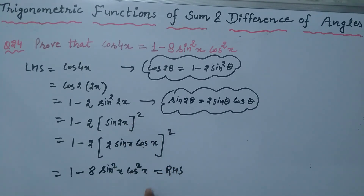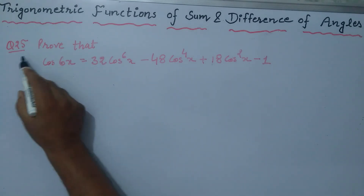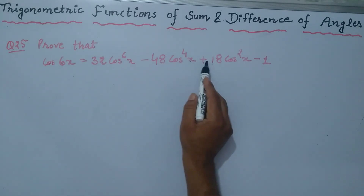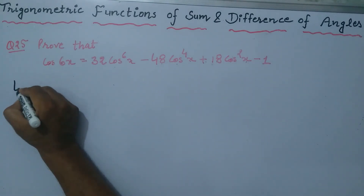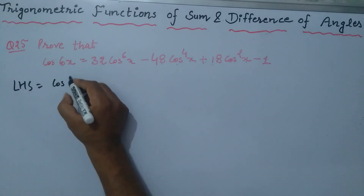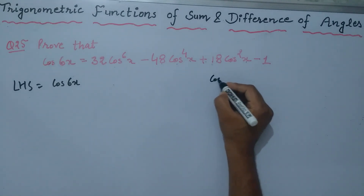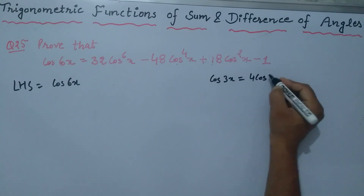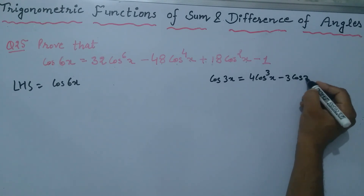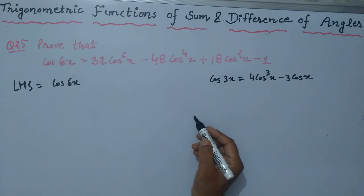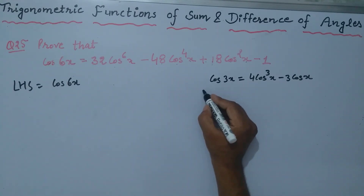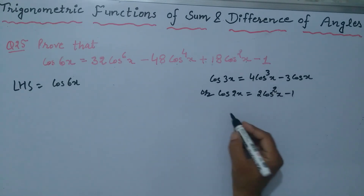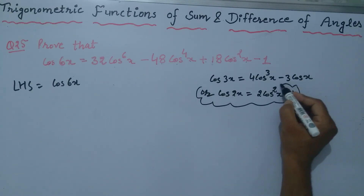The last question of the exercise is question number 25: prove that cos 6x = 32 cos⁶x - 48 cos⁴x + 18 cos²x - 1. We know that cos 3x = 4 cos³x - 3 cos x and cos 2x = 2 cos²x - 1.